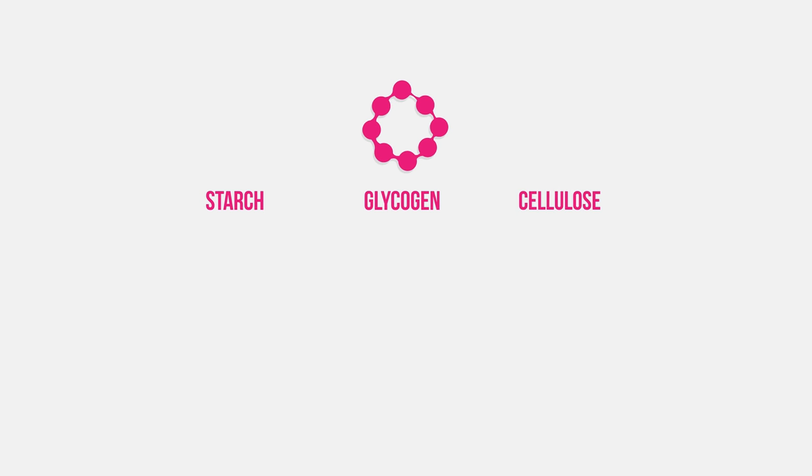Starch, glycogen and cellulose are three important polysaccharides. Cellulose is found in plant walls and starch is the storage unit for surplus glucose made in photosynthesis. Glycogen is the storage unit used by animals for surplus glucose and is found in the liver and muscle tissues. Starch is tested for using an iodine solution. If the solution turns blue-black, then starch is present.